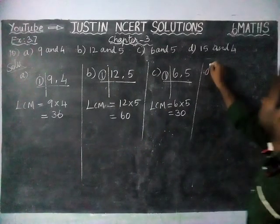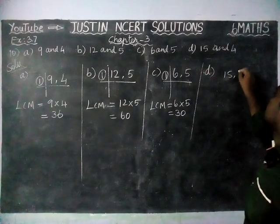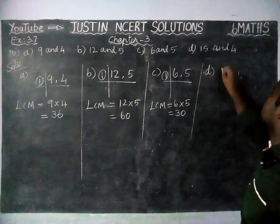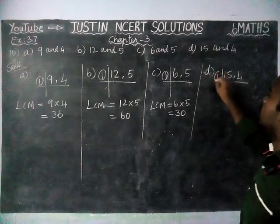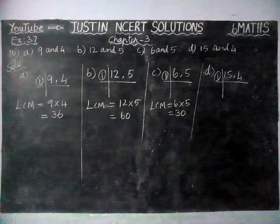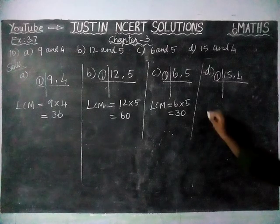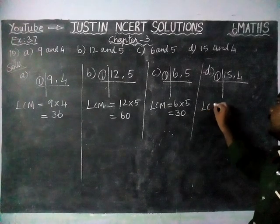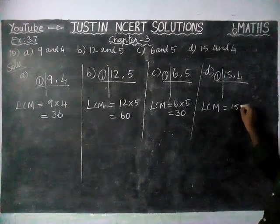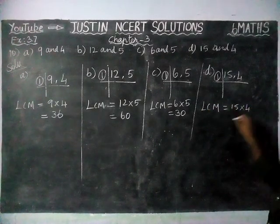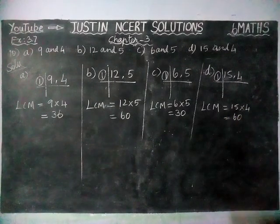Next, we are going to take part D: 15 and 4. Here also, only 1 is the common factor — we cannot divide by any other number. So, LCM of the given values is equal to 15 × 4 = 60.